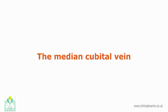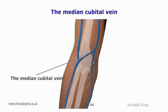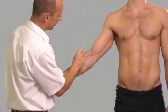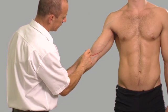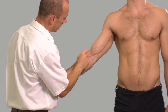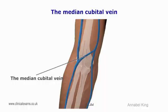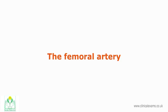The median cubital vein, also called the median basilic vein, is a superficial vein of the upper limb. It lies in the cubital fossa, superficial to the bicipital aponeurosis. It connects the basilic and cephalic veins and has an oblique course from lateral to medial. It is often used for venipuncture.